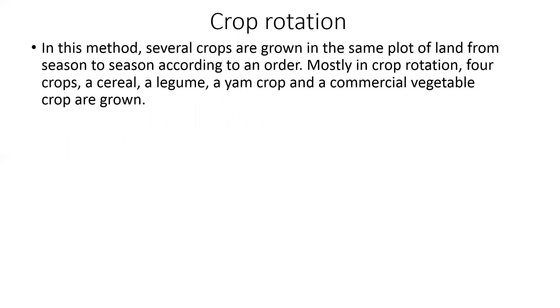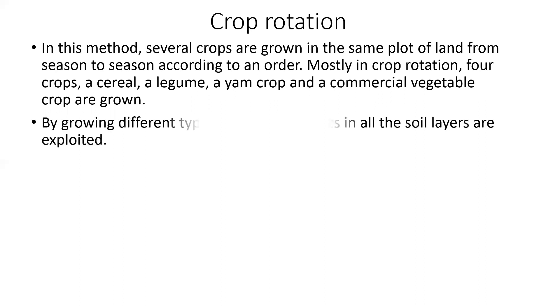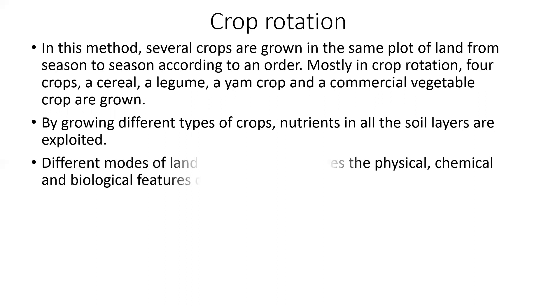Crop rotation: several crops are grown in the same plot of land from season to season according to an order. In crop rotation, four crops are used: a cereal, a legume, a yam, and a commercial vegetable crop. By growing different types of crops, nutrients in the soil layers are better exploited. Different modes of land preparation affect the physical, chemical, and biological features of the soil.